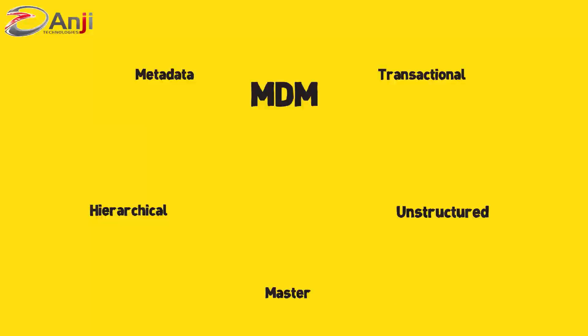Hierarchical data is sometimes considered the super MDM domain because it's critical to understanding the relationships between master data. Master data are critical elements of the business and fall generally into four groupings: people, things, places, and concepts.